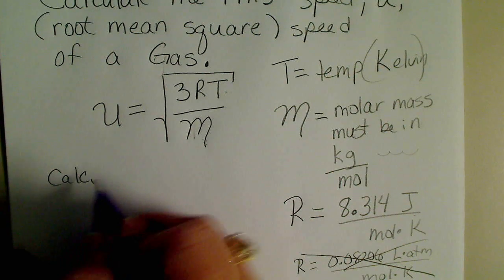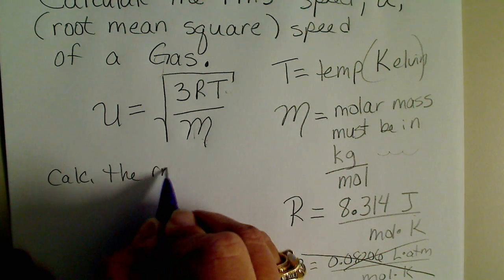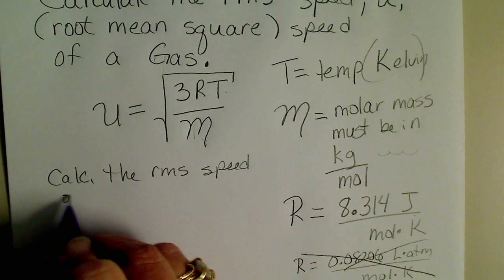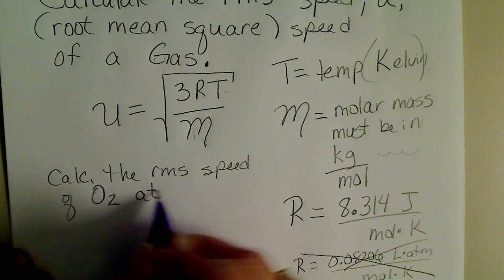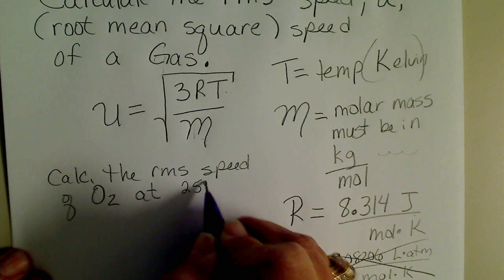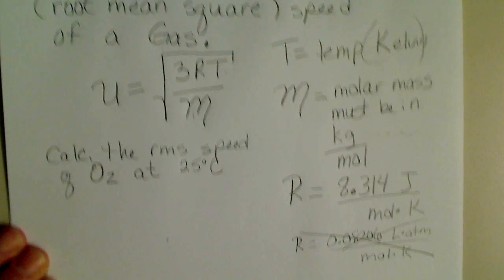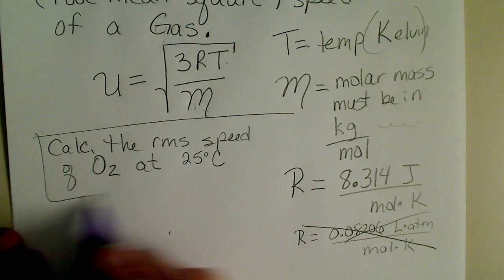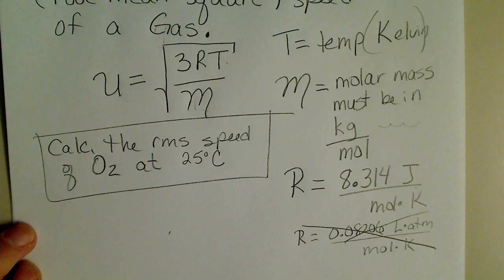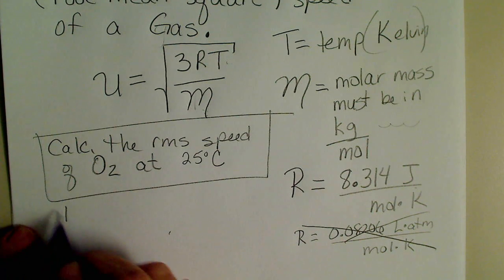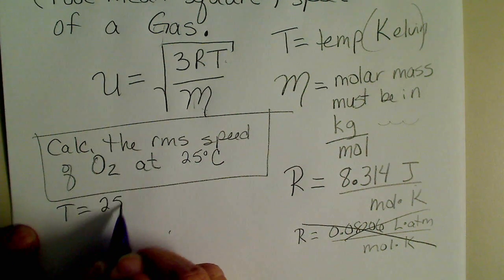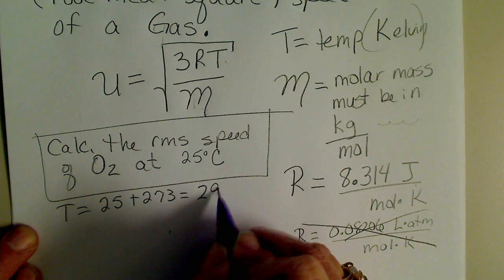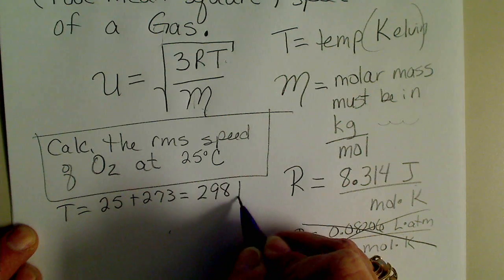Let's calculate the RMS speed of oxygen gas at room temperature, which is 25 degrees Celsius. So our temperature here, in order to get from Celsius to Kelvin, we add 273.